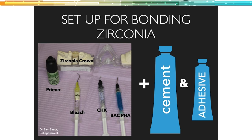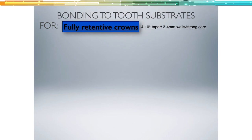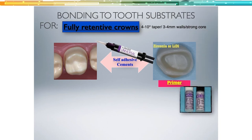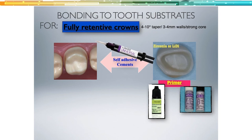My typical setup for a zirconia case: I've got the zirconia crown out, Z-Prime Plus primer, bleach to clean the underside after try-in, chlorhexidine to clean the tooth, and phosphoric acid to clean the tooth as well. For a lithium disilicate crown, I use a different primer but everything else is basically the same — phosphoric acid to clean the underside, chlorhexidine to clean the tooth, and of course my cement and adhesive. Both primers help with sealing and bond strength.